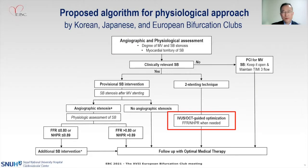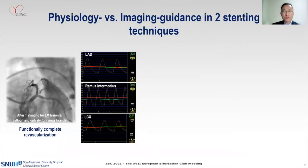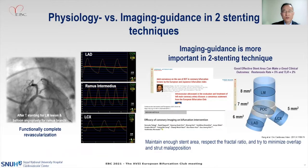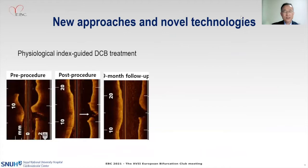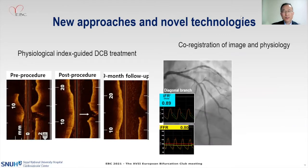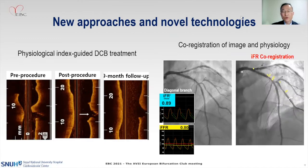We also describe the balance between physiology and imaging, especially for two-stenting techniques. We can still use physiological indices to define residual ischemia and confirm complete functional revascularization. However, for procedure optimization, we recommend imaging guidance over physiology guidance, as it is more important for patient outcomes than physiological values. We also presented physiological index-guided treatment of diffuse coronary vessel disease, which seems very promising, and we strongly recommend using co-registration of imaging and physiology to identify the location of physiological significance. In one case, the pressure step-up was quite diffuse, so ischemia could not be relieved by fixing the diagonal branch ostial lesion alone.